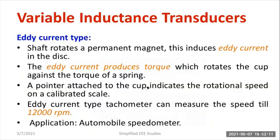As written: the shaft rotates a permanent magnet, which induces eddy current on the disc. The eddy current produces the torque, which rotates the cup against the torque of the spring — the torques from the spring and the cup are opposite. A pointer attached to the cup indicates the rotational speed of the shaft. The eddy current type tachometer can measure speed up to 12,000 RPM. The application, as mentioned, is the automobile speedometer.